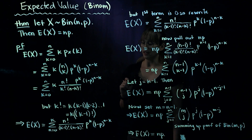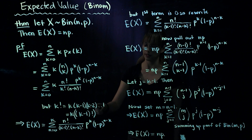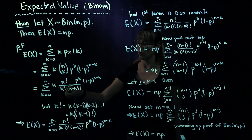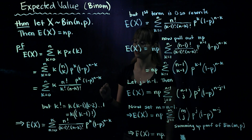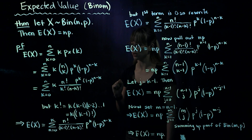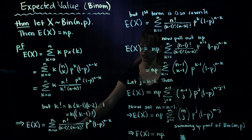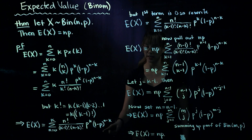Now we're going to do a little bit of canceling. Notice that k factorial is equal to k times k minus 1 factorial. This is useful because we have a k in the numerator and now we essentially have a k in the denominator, so we're going to cancel those two. That gives us n factorial divided by k minus 1 factorial times n minus k factorial, times p to the k times 1 minus p to the n minus k, summing from k equals 0 to n.